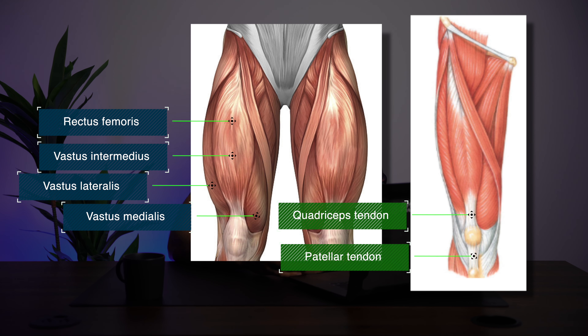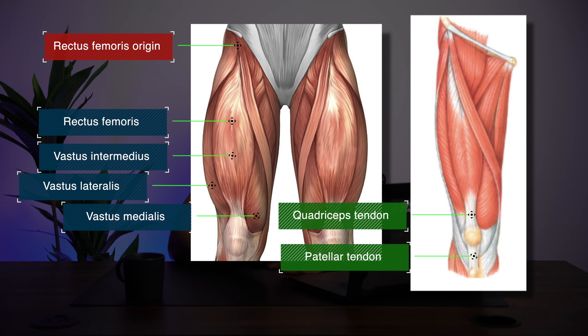The vastus brothers all originate on different parts of the femur, whereas the rectus femoris originates on the front of the pelvis. Due to this, all of the quads extend the knee, but the rectus femoris also flexes the hip.